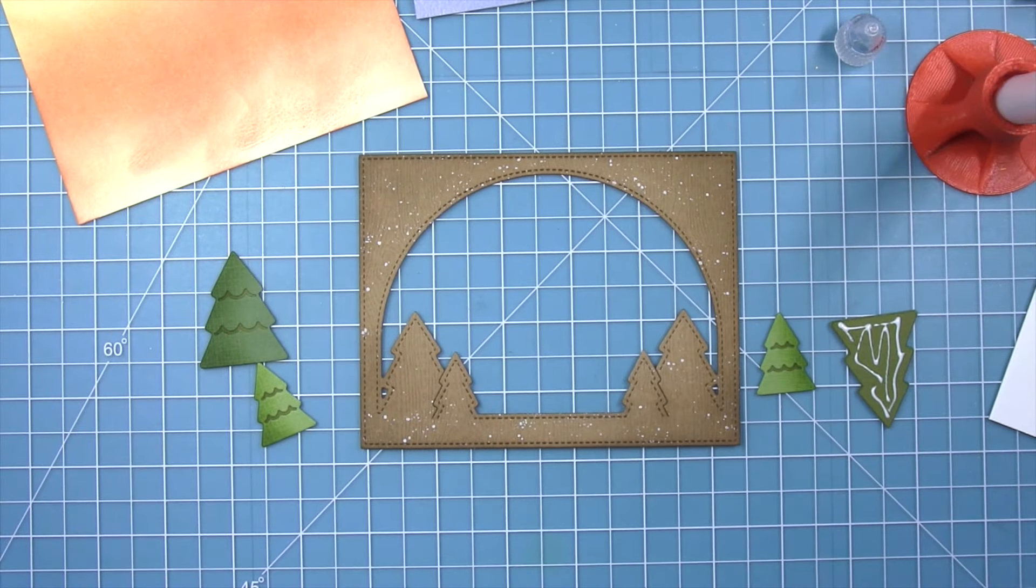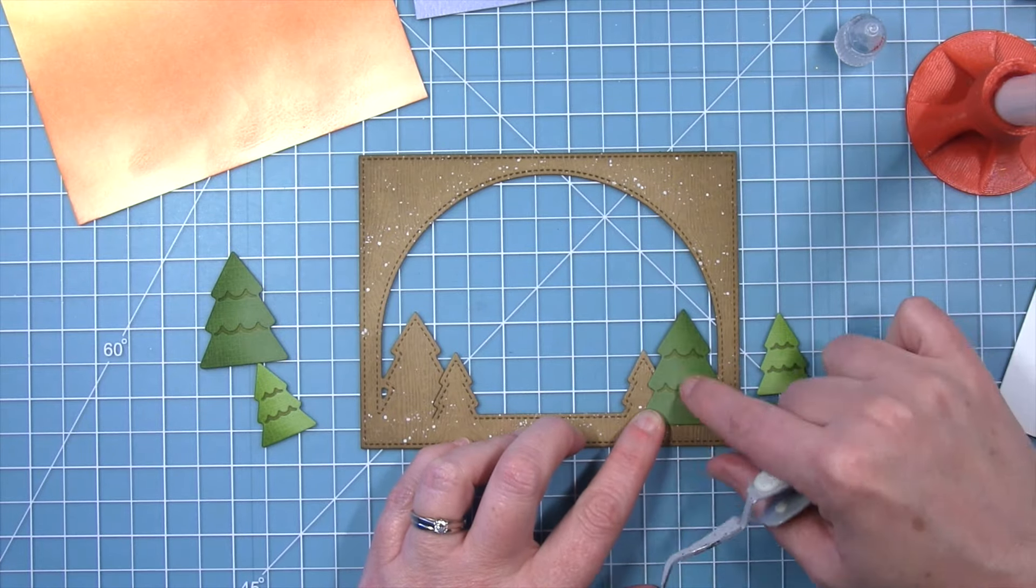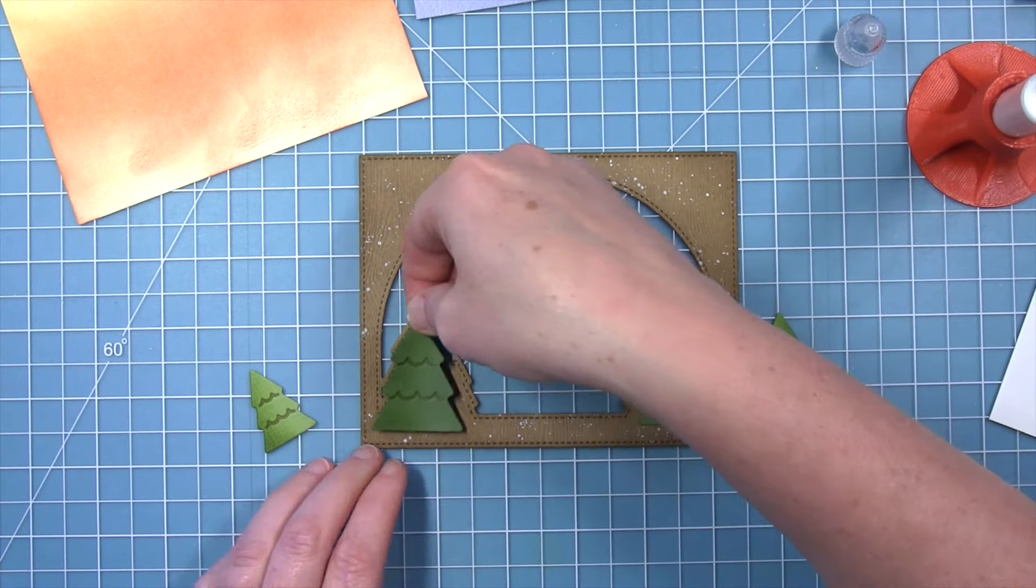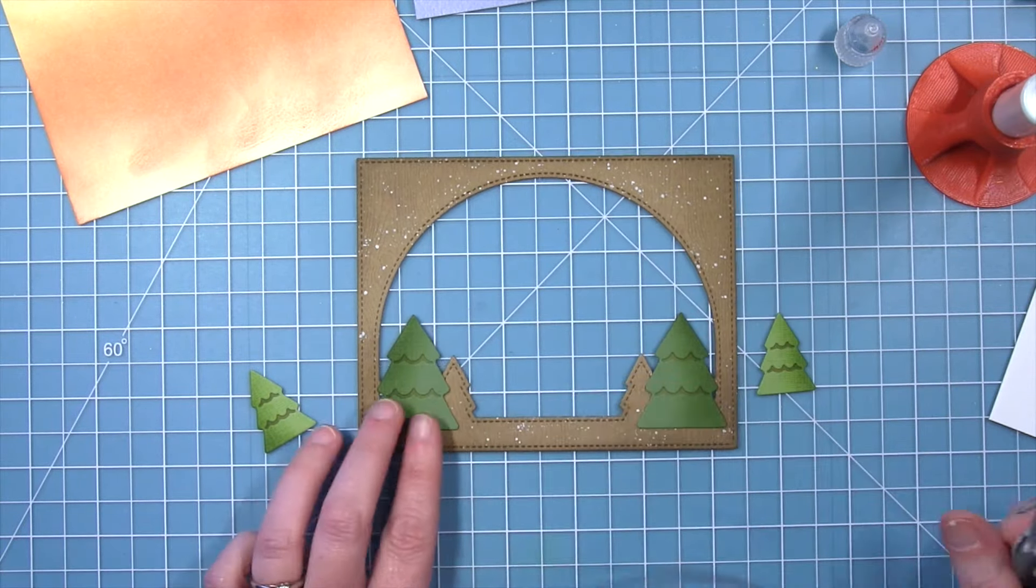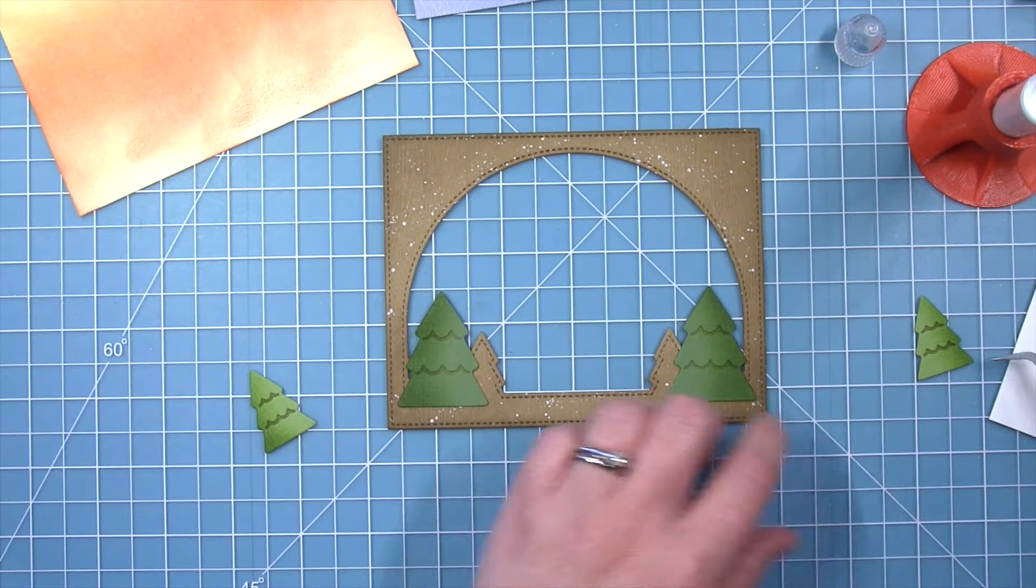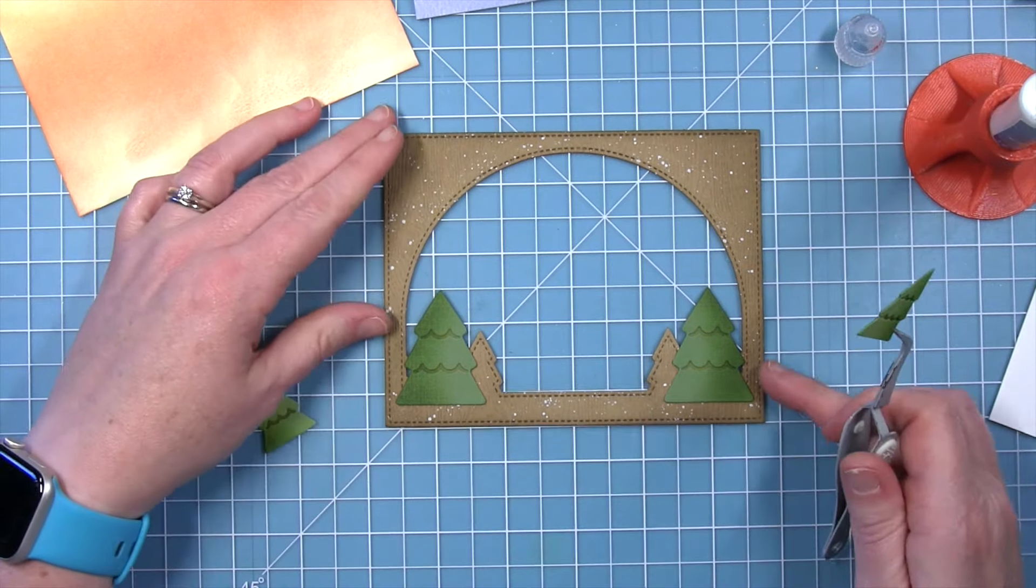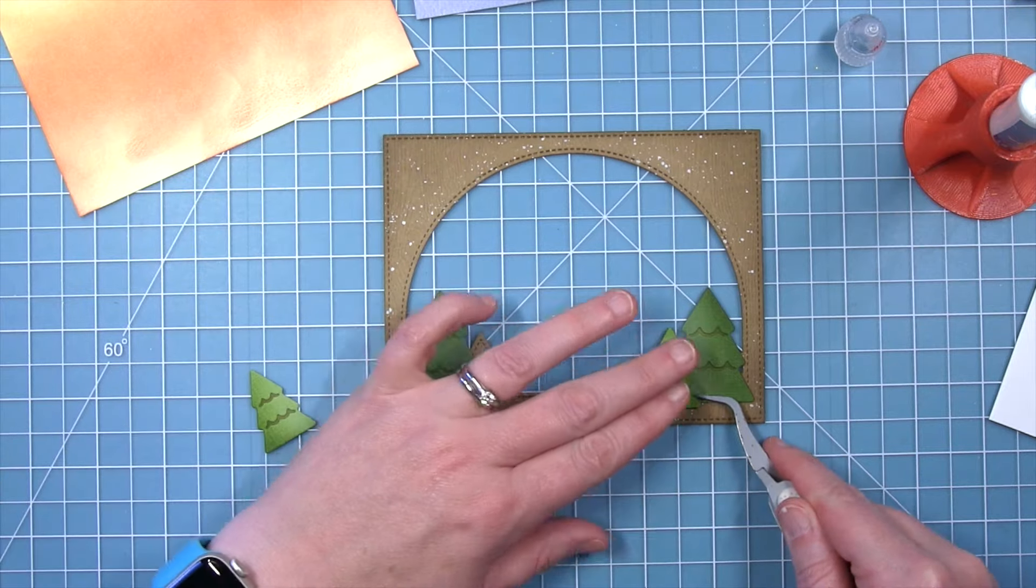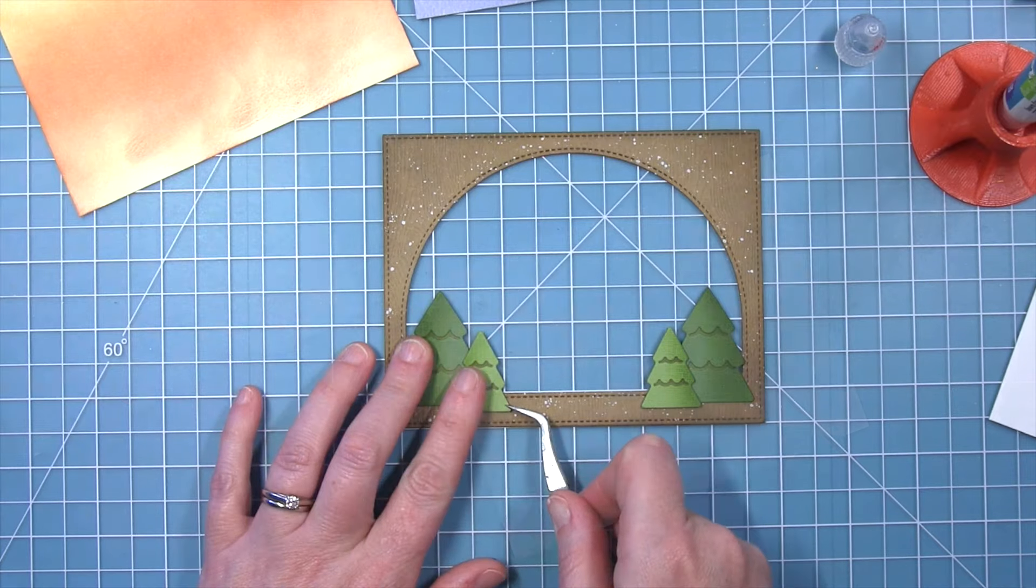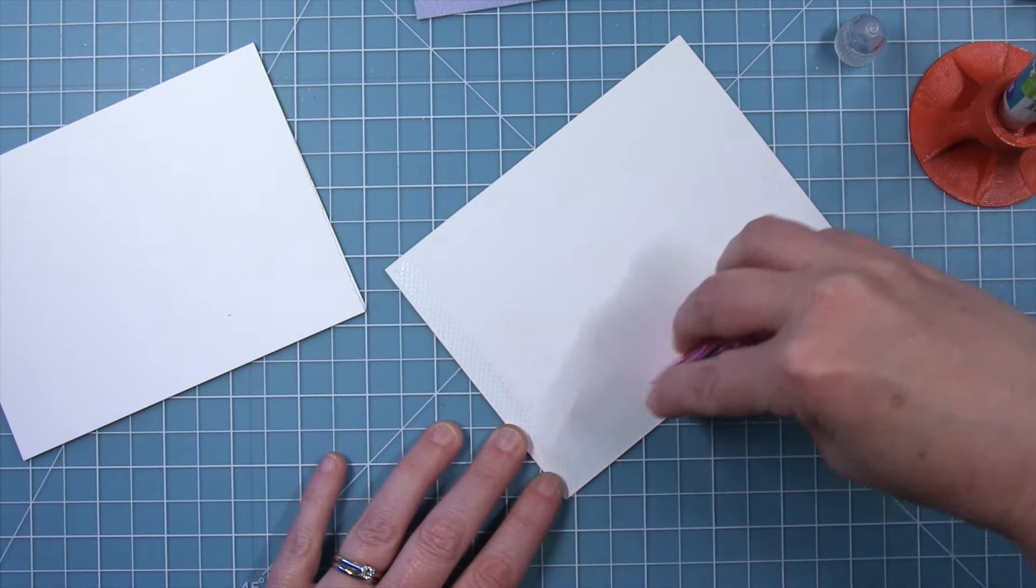So now that I've got all my ink blending done, I can start to assemble my card. And I am going to start by putting these trees onto that forest backdrop. And I actually kind of like the look of the trees without the green ones because you do get that nice stitching detail. But in this case I wanted a little more color added to this card, so I just put the big ones down first and then I'll layer the little ones on top. You could even pop these up with foam if you wanted, but I'm going to end up popping up the whole frame.